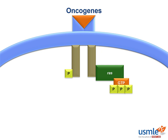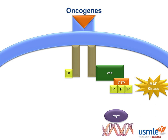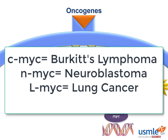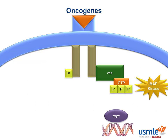An activated RAS with GTP bound stimulates the MAP kinase cascade, which ultimately results in the synthesis of a transcription factor called MYC. Once phosphorylated and activated, MYC travels to the nucleus and leads to cell proliferation. Increased activity of several different MYCs is associated with certain cancers: C-MYC is associated with Burkitt's lymphoma, N-MYC with neuroblastoma, and L-MYC with lung cancer. Note that N-MYC and MYC-N are the same thing, as are L-MYC and MYC-L1.